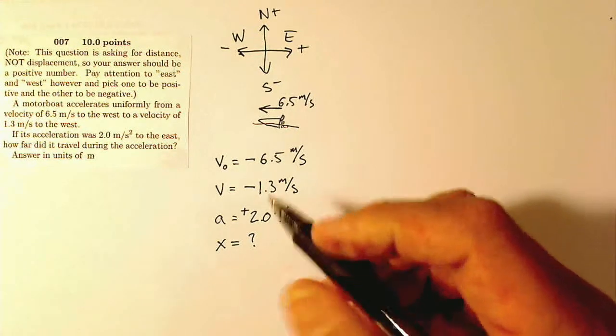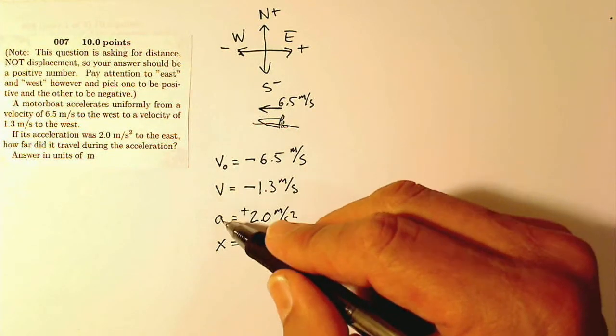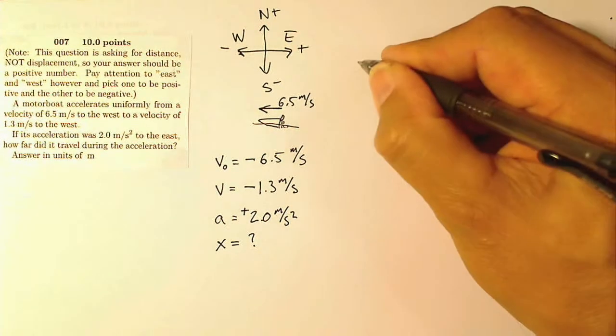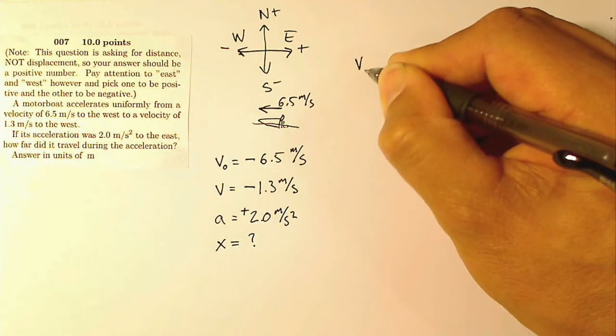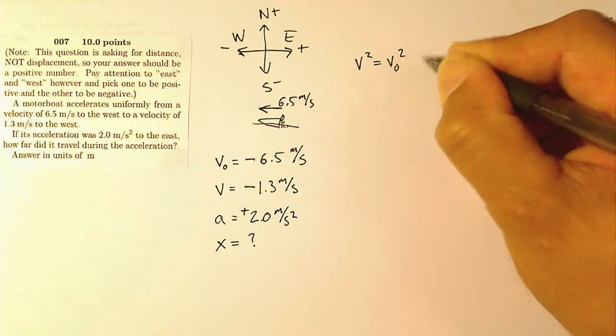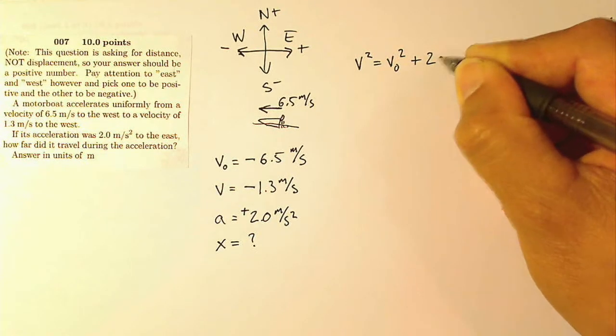So now I'm looking for an equation that relates initial velocity, final velocity, acceleration, and displacement, but doesn't have time. So the equation I'm going to use is, I'm going to look at my four equations of motion, and I'm going to see that v squared equals v zero squared plus 2ax.